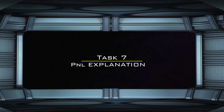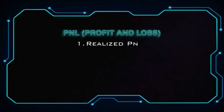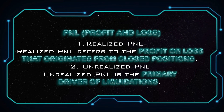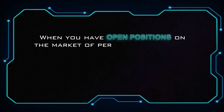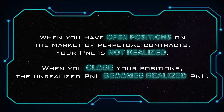Task 7: PNL Explanation. PNL means profit and loss. There are two types of PNL. First, Realized PNL. Second, Unrealized PNL. Realized PNL refers to the profit or loss that originates from closed positions. Unrealized PNL is the primary driver of liquidations. You can always check your unrealized PNL here. When you have open positions on perpetual contracts, your PNL is not realized. When you close your positions, the unrealized PNL becomes realized PNL.